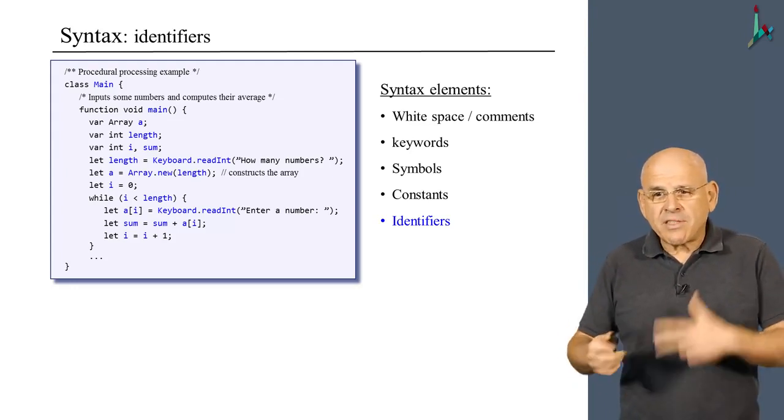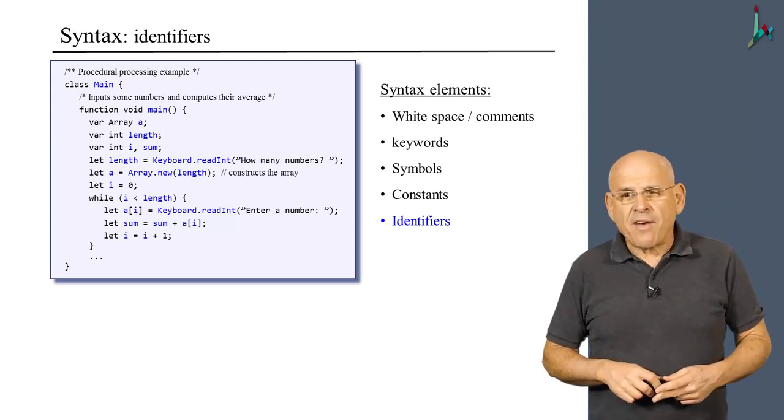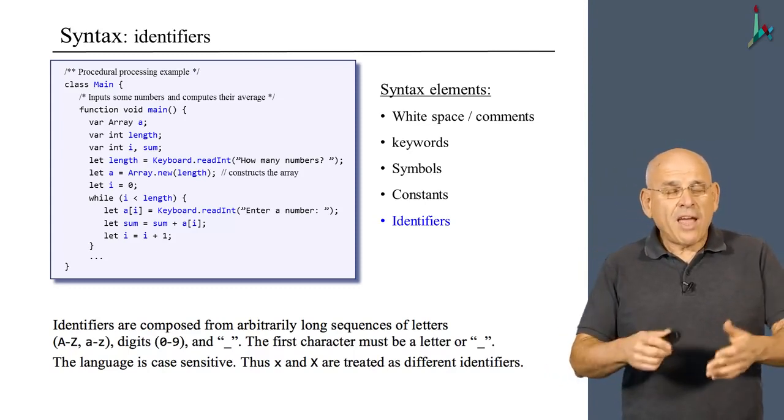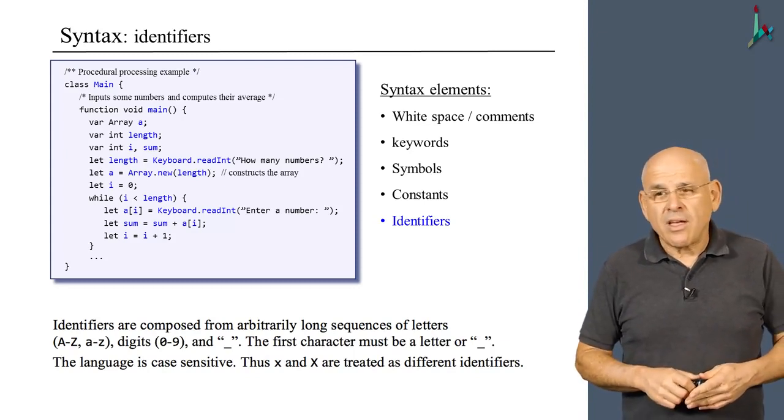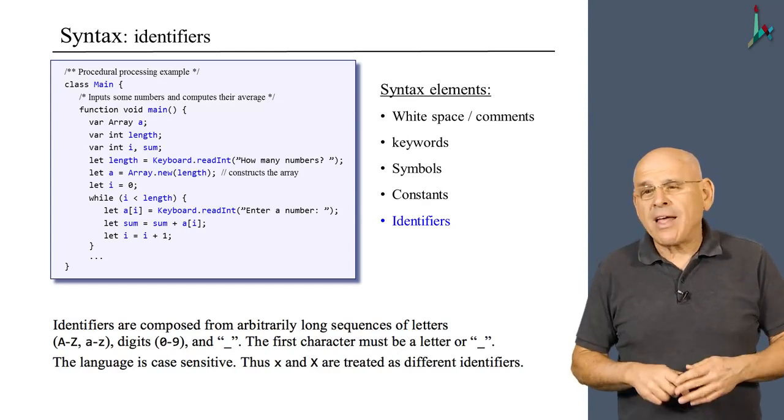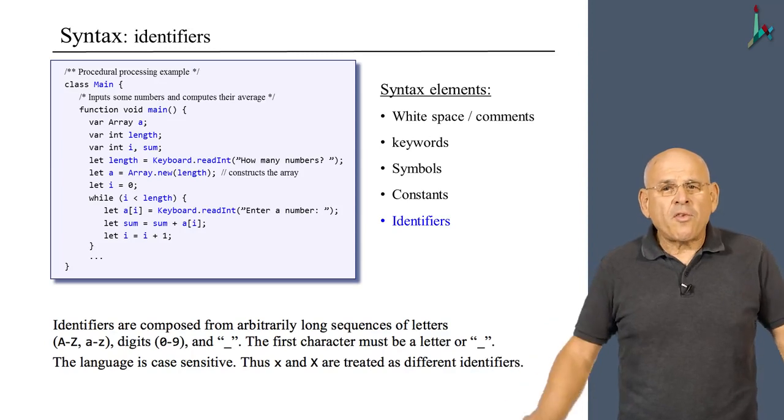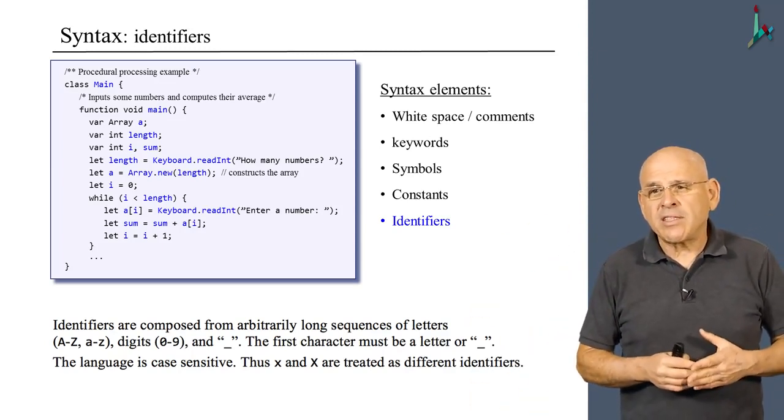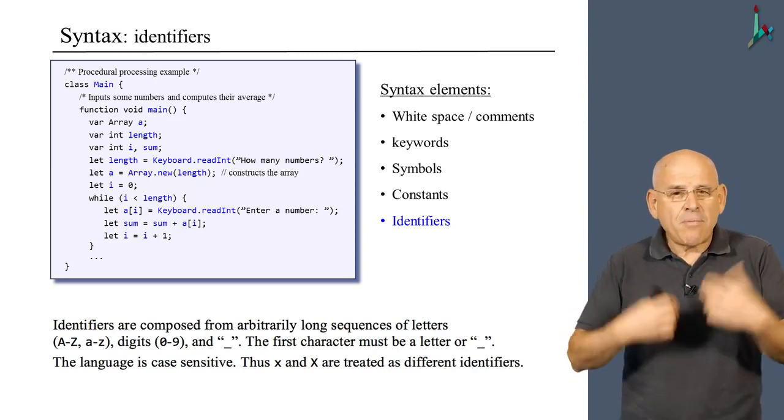These names have certain rules on what constitutes a valid identifier. I want to point out once again that Jack and Java in their own right are very simple languages. What makes these languages powerful, in particular Java, is the fact that the programmer is free to create a whole world of his or her own.